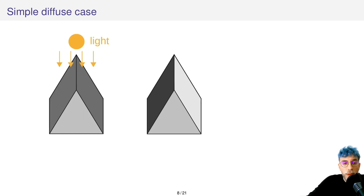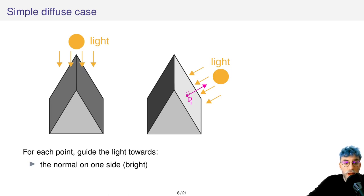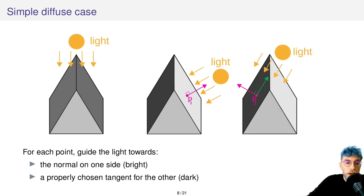If I come back to my previous example with the diffuse ridge, when it's lit from above or frontally it's difficult to perceive its shape. We would rather have what's on the right. And to achieve that, for each point we will guide the light toward either the normal on one side so that it becomes bright, and for the other points, the points on the other side, we will align the light with a tangent so that the side becomes darker.